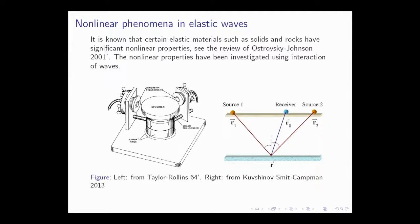The picture on the left is from a paper by Taylor and Rowlands from 1964. In the middle you have the specimen, which is supposed to have nonlinear properties, and there are two transducers on the boundary that send ultrasonic waves into the specimen. These waves are supposed to meet inside the specimen, and then another transducer on the boundary measures the possible nonlinear responses. From that, people first want to categorize such nonlinear responses, and then determine the nonlinear properties of the elastic material.